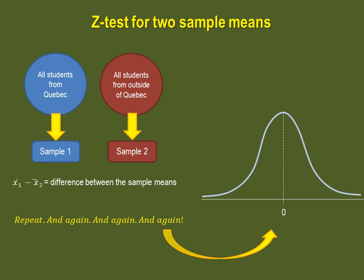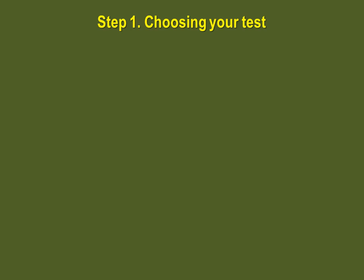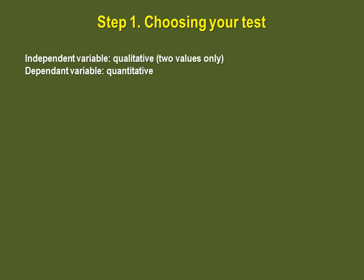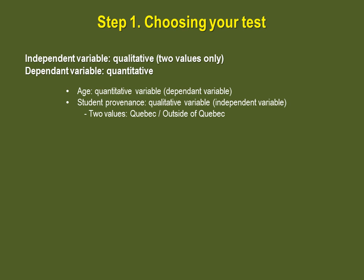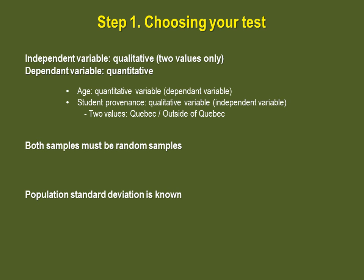Now let's go through a complete example of testing the differences between two sample means. Just like all other tests we have seen, we start by choosing which test we will do. Unlike the chi-square test where both the independent and dependent variables were qualitative, here our independent variable must be qualitative and our dependent variable must be quantitative. In our example, age is the dependent variable and is quantitative, and student provenance is the independent variable with only two values and is qualitative. A second condition is that both samples must be random. A third condition is that you must know both populations' standard deviations. The final condition is that both sample sizes must be higher than 30.